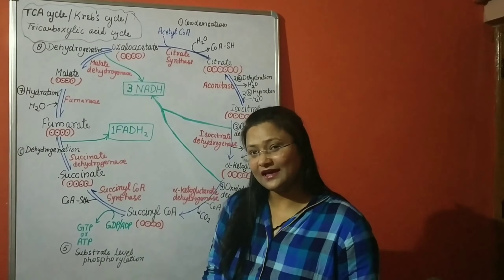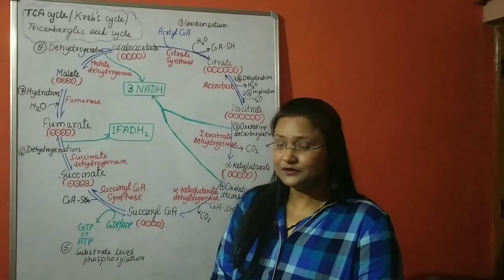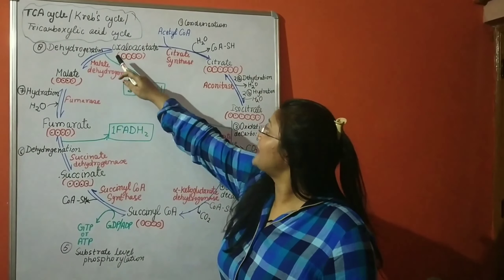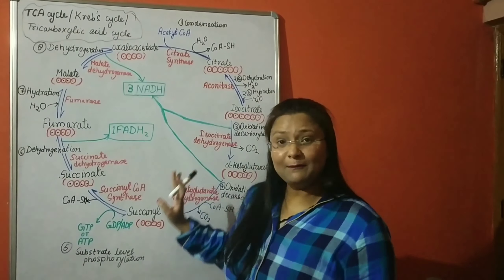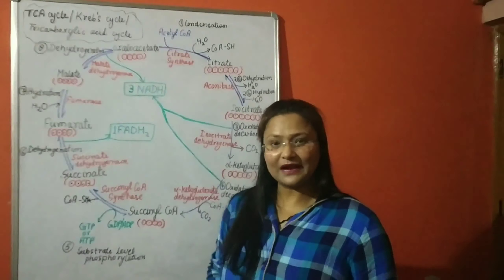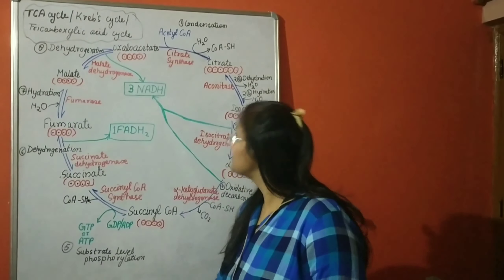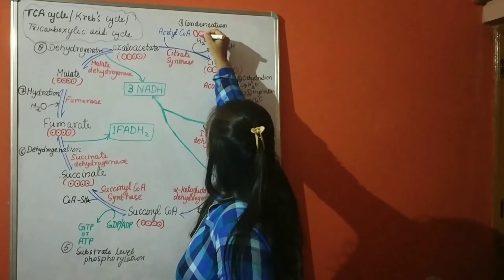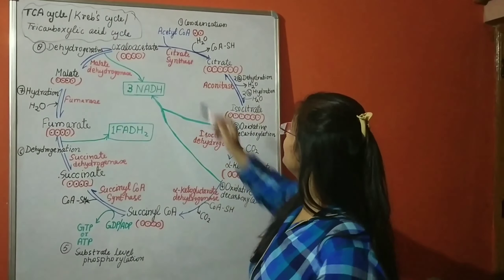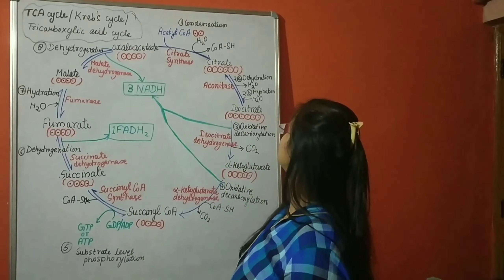Once acetyl-CoA is produced in the pyruvate dehydrogenase complex, it reacts with oxaloacetate. All of this happens in the mitochondria itself — the pyruvate dehydrogenase complex is in the mitochondria, and the TCA cycle also occurs in the mitochondria. Oxaloacetate is a four-carbon compound, and acetyl-CoA is a two-carbon compound.